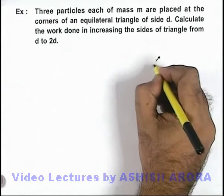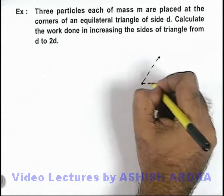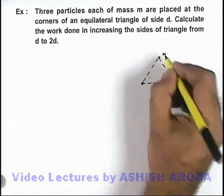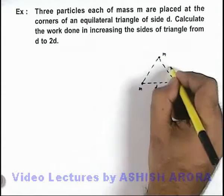Say, this is the situation when 3 masses, each of mass m, are placed at the vertices of an equilateral triangle having sides d.